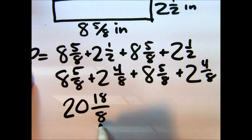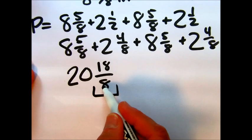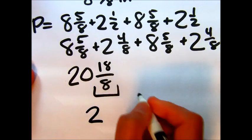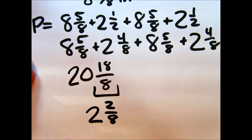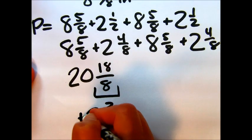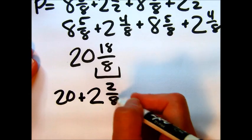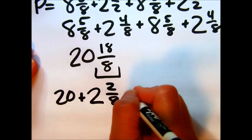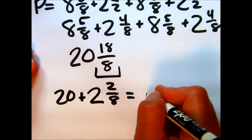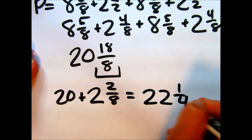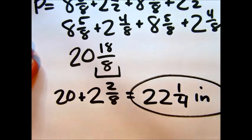Notice this 18/8, that's really an improper fraction within the mixed number. So we want to change that into a mixed number and then add it to the 20. If I just look at the 18/8, I know that 8 goes into 18 two times with 2 left over. So 2 2/8. We're going to add that to the 20. And also we could reduce this. 2 goes into 8 four times. So really when we get to our final answer, we're going to have 22 1/4 inch. And that would be the perimeter.